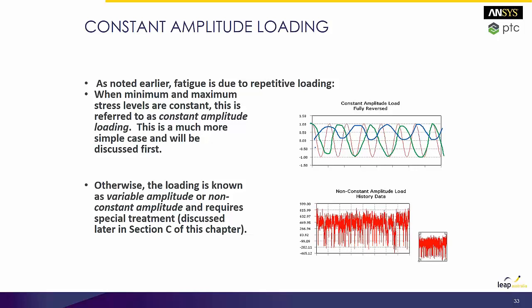Or you might have another load that goes from minus 0.5 to 1.5. In any case the load changes direction. Another type of loading which is more common is where you've got a load history — a trace with no real sine wave, square wave, or triangle wave. This can be a mixture of a whole series of different amplitudes all combined into one, such as from driving over a rough road.